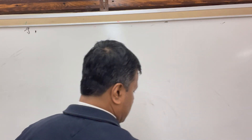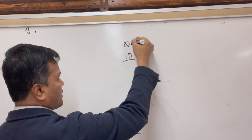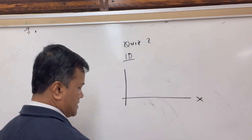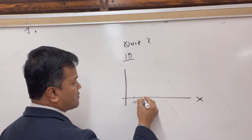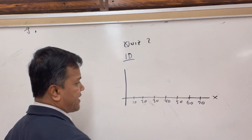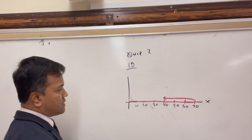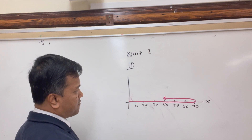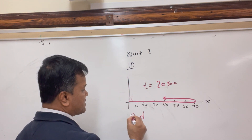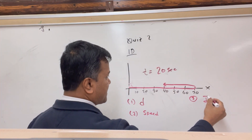Now let's talk about tomorrow's quiz for a few seconds. I'll probably ask you to do a 1D motion problem. Mr. Berry moves along the x-axis marked 0 to 70. He starts, turns around, and comes back, taking 20 seconds total. I'm going to ask you to find the distance, find the speed, find the displacement, and find the velocity. Pause the video and try it yourself, then verify your answer with mine.